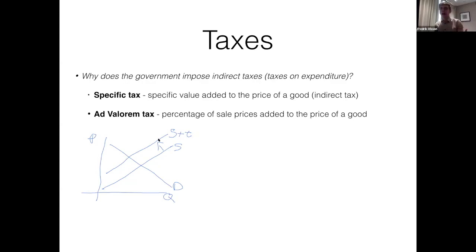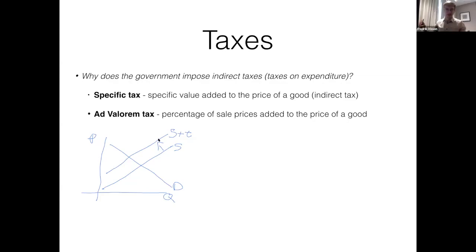The other type of indirect tax is what we call an ad valorem tax. An ad valorem tax, as you can see from the definition, is a tax where a percentage of the sale price is added to the price of the good. Instead of saying we're going to add two dollars in taxes to every cigarette box sold, it's saying let's add a tax of 10% or 20% to the good being sold. The implementation is a tiny bit different.